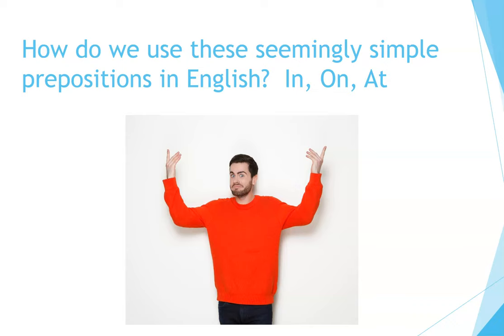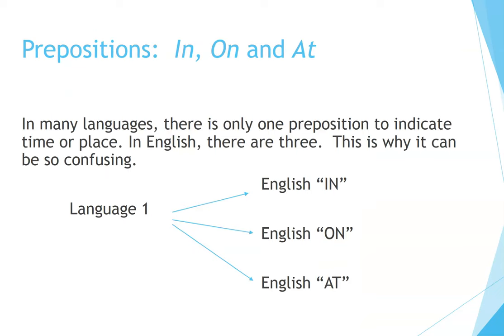How do we use these seemingly simple prepositions in English — in, on, and at? In many languages, there is only one preposition to indicate time or place. In English, there are three. This is why it can be so confusing.